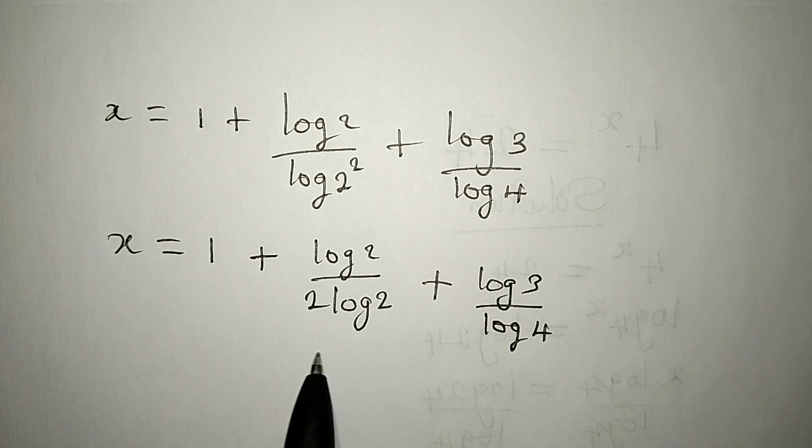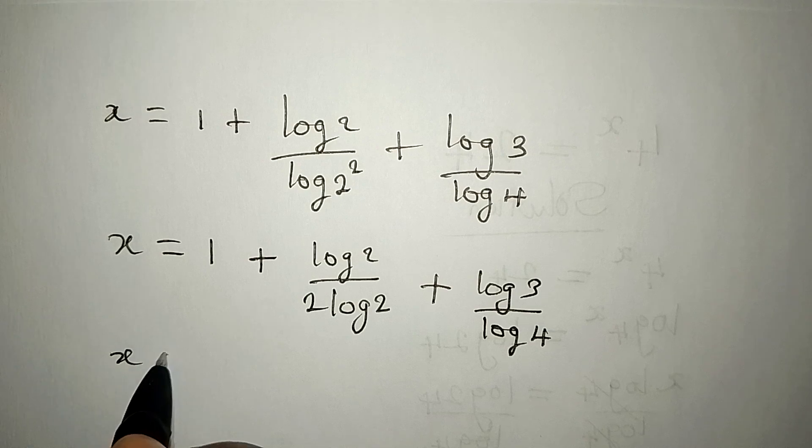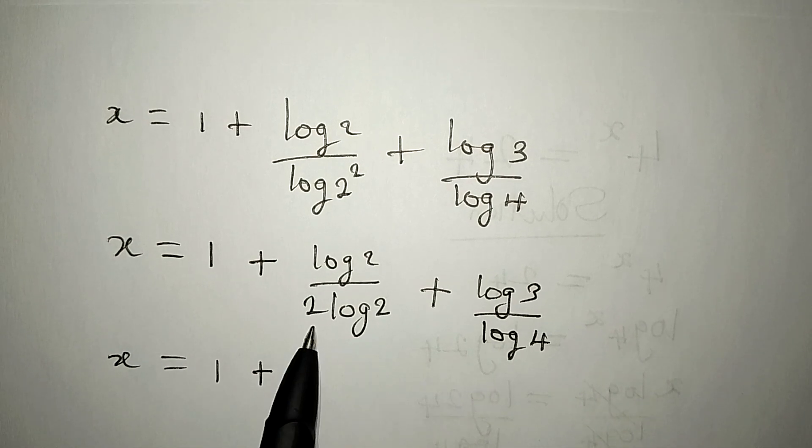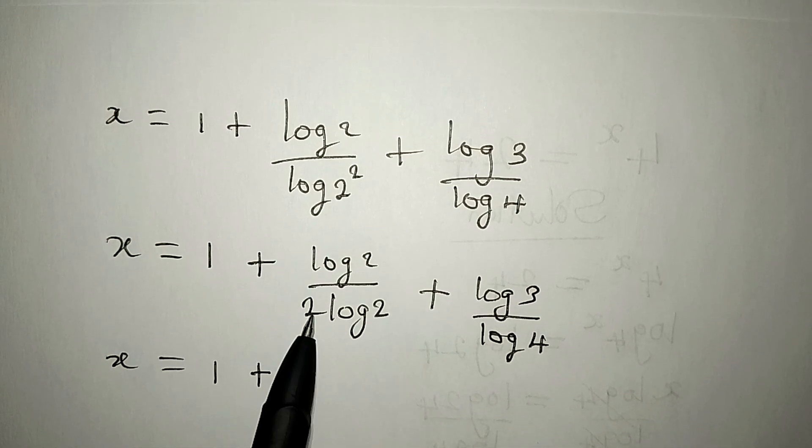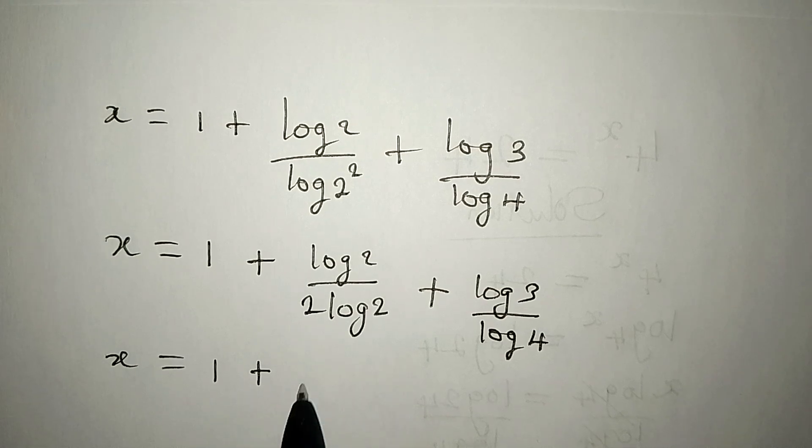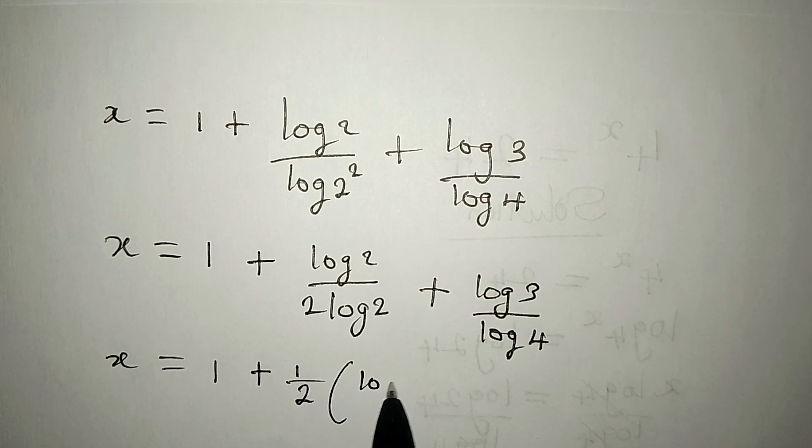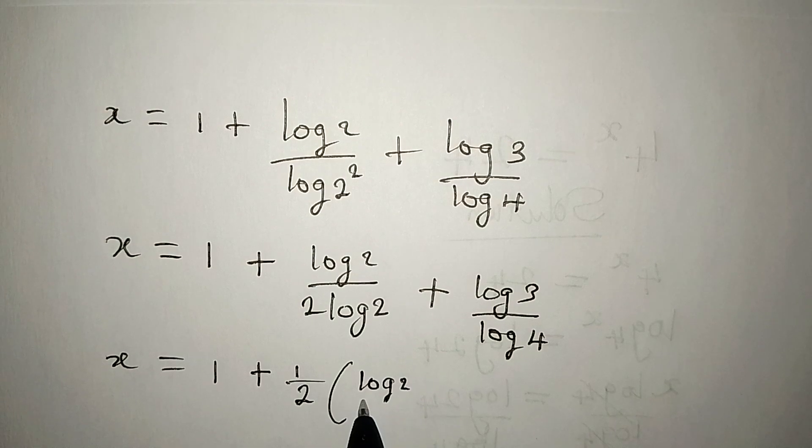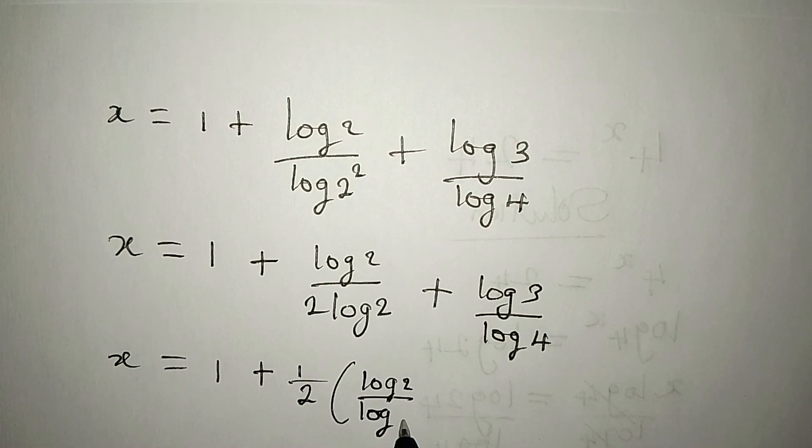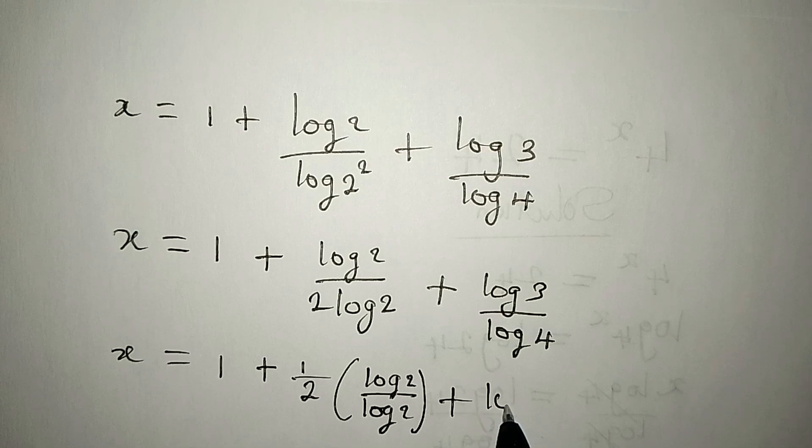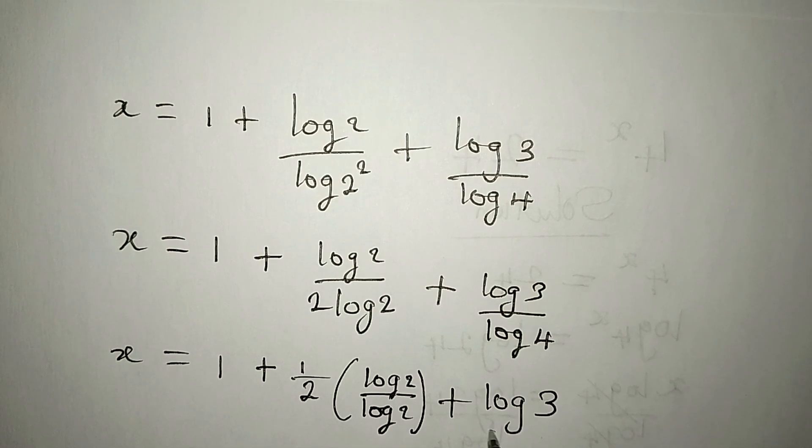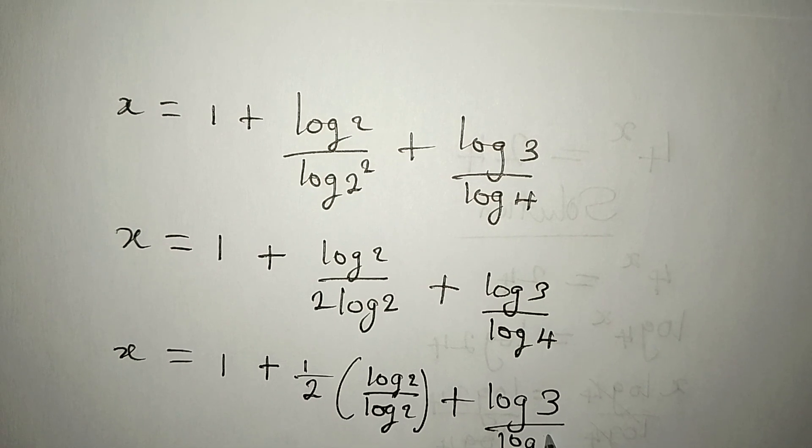To continue with this, our x will be equal to 1 plus, remember we have 1 here, we have 2 here, and 1 is up. So, this is 1 over 2 into log 2 over log 2. Then, plus log 3 over log 4.